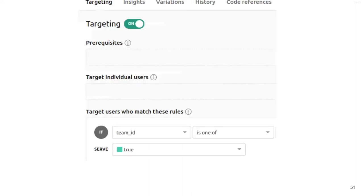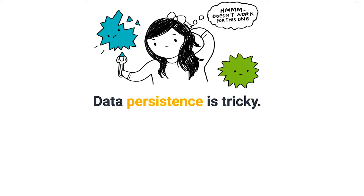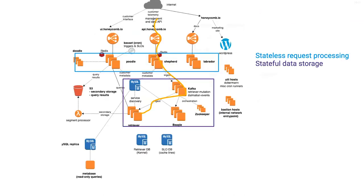Feature flags help us experiment on a subset of users or on internal users. Internal users are always your best ever test users. This works really well for stateless stuff, but less well when each request is not independent, or when you have data sitting on disk, when you're trying to mutate something or store something. So how do we handle a data-driven service that allows us to become confident in the service?